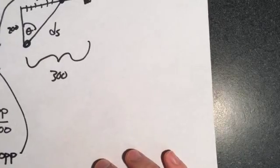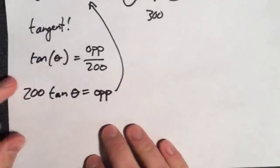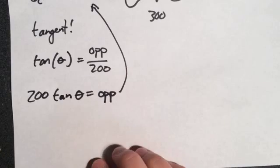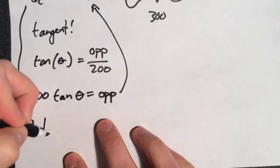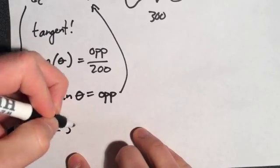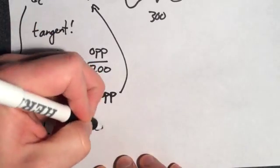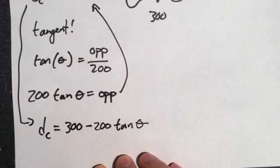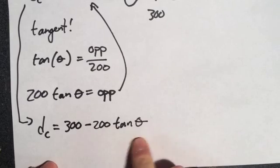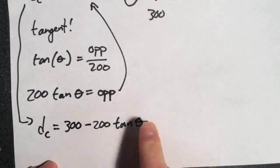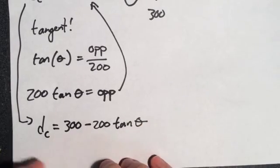So if we keep going, we end up with that DC, the distance on the concrete, is 300 meters minus 200 tangent of theta. And notice that we've done something really cool here. We've gotten rid of all the variables, and we solved this equation for theta. So now again, you plug in a theta, and you get out the distance you want.